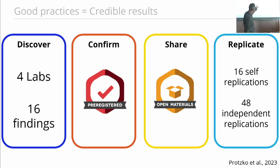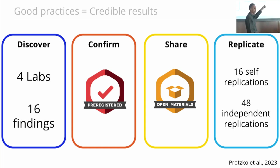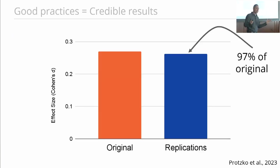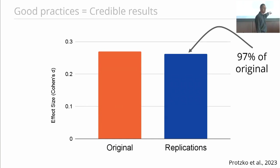In the end, we produced self-replications 16 times — we replicated our own findings. Then the other three labs did independent replications with unique samples. What we find is that the average effect size across those 16 findings is very close to the average effect size of the replication studies. When you adopt all those practices, you get replicable results, at least in this example of 16.